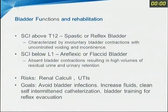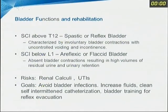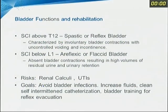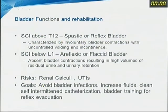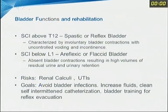For bladder function rehabilitation: above T12, the patient gets a spastic or reflex bladder; if the cord injury is below L1, a flaccid bladder results. Catheterization is needed, and there is risk of renal calculi and UTIs. Adequate fluid intake should be encouraged. Paraplegic patients can be taught clean self-intermittent catheterization, and the bladder can be trained to evacuate reflexively by stroking — this is bladder rehabilitation.